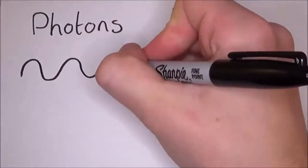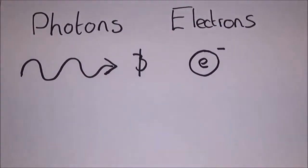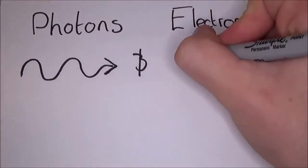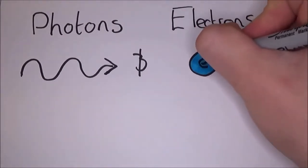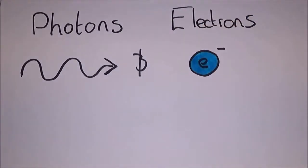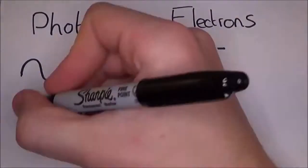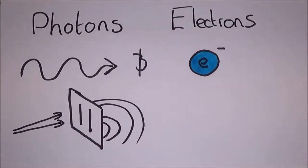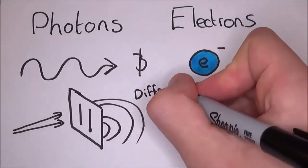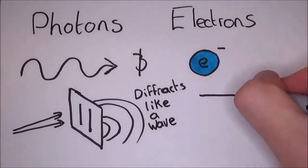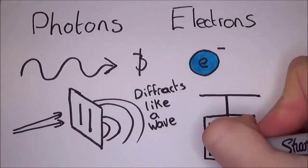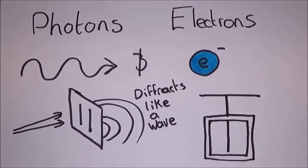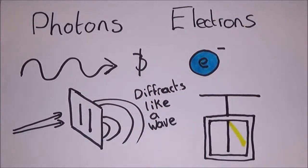But most importantly, Feynman wouldn't have been able to create these diagrams without the core knowledge of the photoelectric effect that Einstein discovered, where photons and electrons can act as both waves and particles.